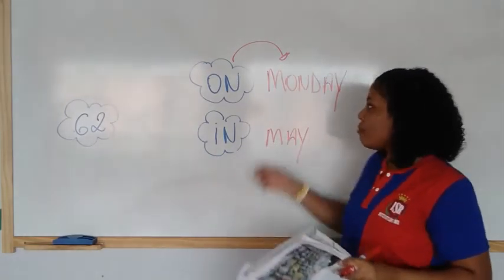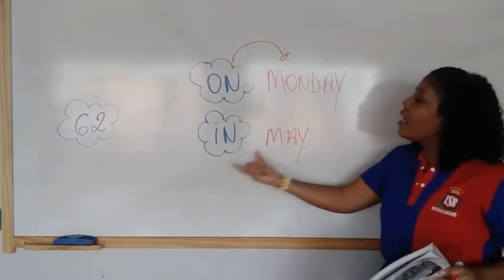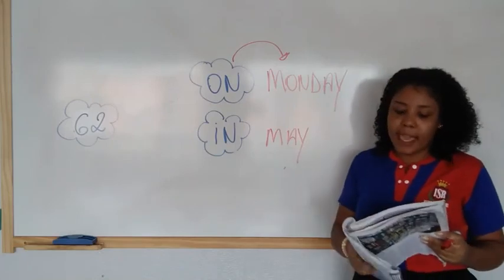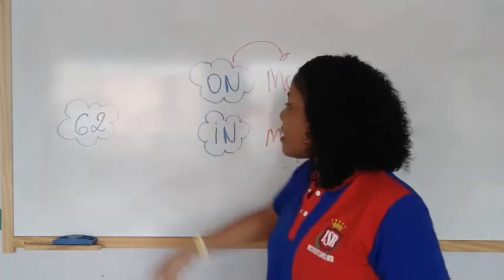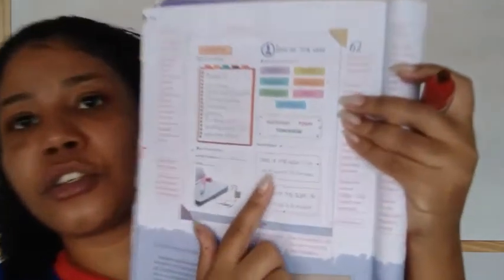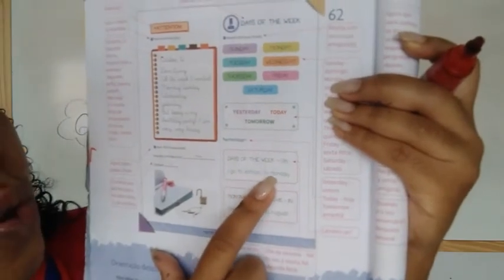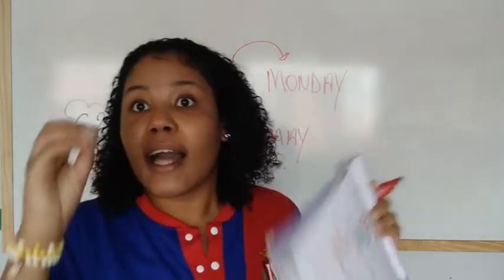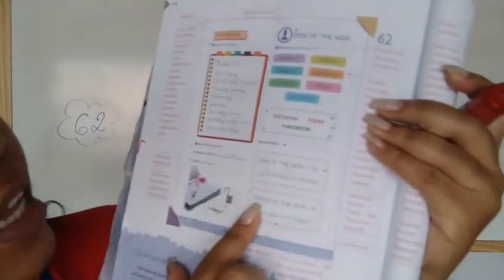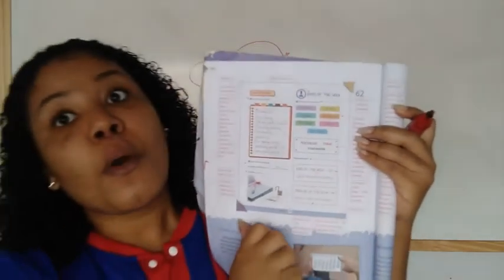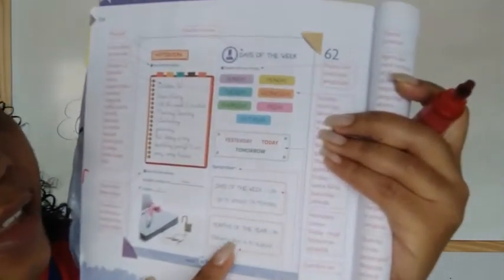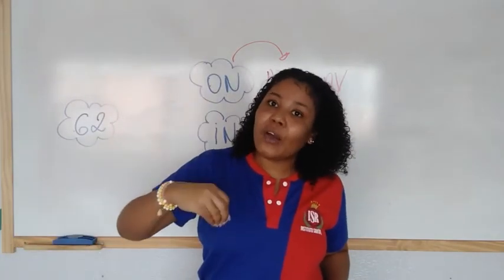So we have: ON — we use for the days of the week. IN — we use for the months. Look at page 62 at the bottom with the teacher. It says: Remember — Days of the Week, we use ON. Example: 'I go to school on Monday' — Eu vou para a escola na segunda. And for months of the year we use IN. Example: 'Father's Day is in August' — O dia dos pais é em agosto. Okay?